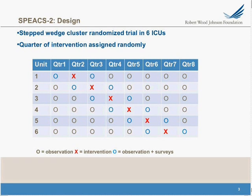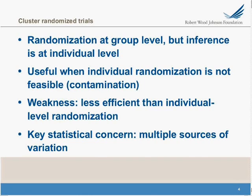Let me back up and give you a little primer, which is the purpose of this webinar. What is a cluster randomized trial? The word cluster means a group of things together — like a peanut cluster where you have peanuts covered with chocolate all smooshed together, which are my favorite treats. Randomization is at the group level, although inference is at the individual level. It's useful when individual randomization is not feasible, most typically in the situation of contamination.